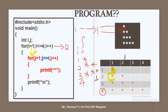Next, i is incremented — i value becomes 2. With i value 2, the j loop runs. j equals 1: 1 is less than or equal to 2, condition is true, so the next star is printed. j is incremented to 2: 2 is less than or equal to 2, condition is true, so the second star is printed. j is incremented to 3: 3 is less than or equal to 2, condition is false — so the new line character is printed and control moves to the next line.